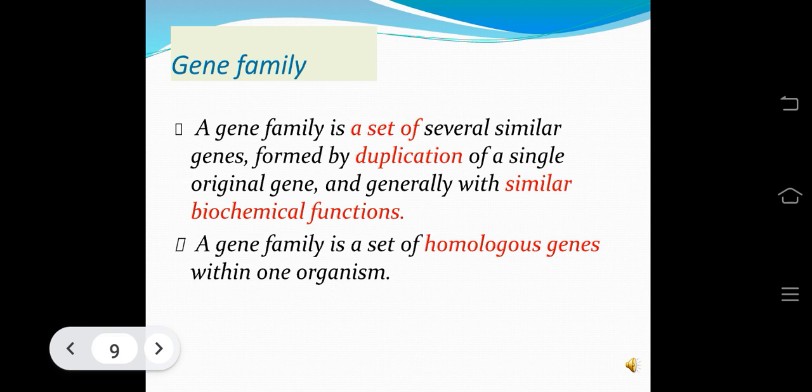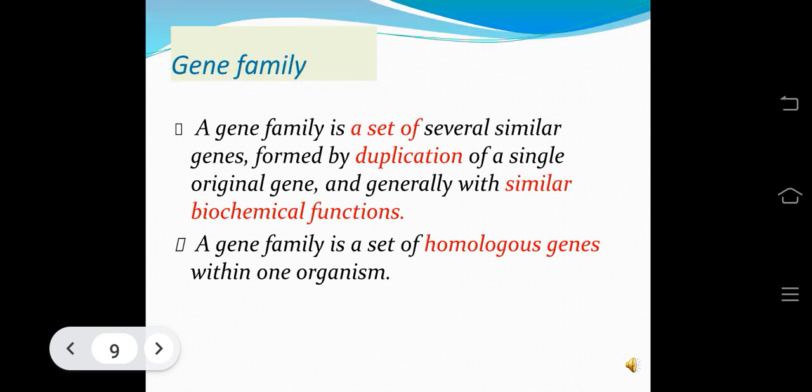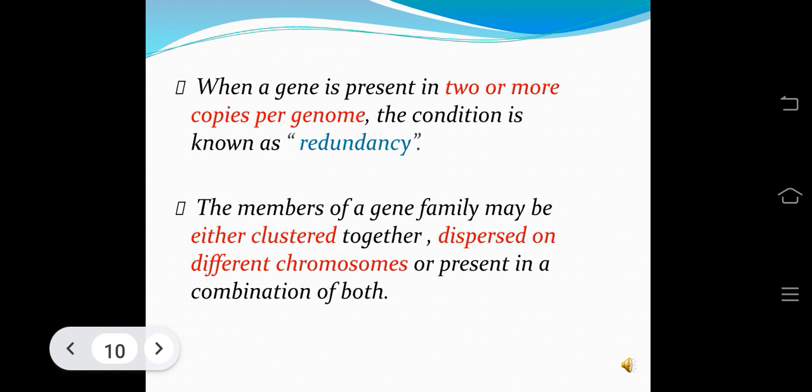A gene family is a set of several similar genes formed by duplication of a single original gene, generally with similar biochemical functions. It is a set of homologous genes within one organism. When a gene is present in two or more copies per genome, the condition is known as redundancy. Members of a gene family may be clustered together, dispersed on different chromosomes, or a combination of both.